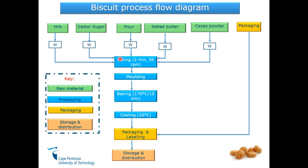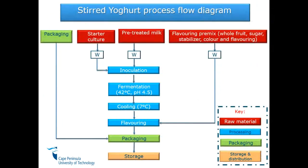What you must note in this flow diagram is that I don't have long names — it's molding, mixing, baking, cooling, packaging, and storage. You don't have to type in the whole sentence in a process flow diagram; just a brief one or two words for each processing step, and then the parameters are very important: at what speed are you mixing, at what temperature, and for what time. Here is another example — a set yogurt process flow diagram. We still have our packaging material, and then we have a starter culture, pretreated milk, and a flavoring premix, which is in powder form containing fruit, sugar, stabilizer, color, and flavoring.